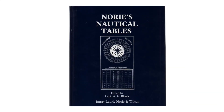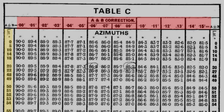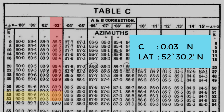Let's go back to Norie's nautical table again with our C correction and latitude. Look for the value of C on top of the table and the latitude on the left or right side.